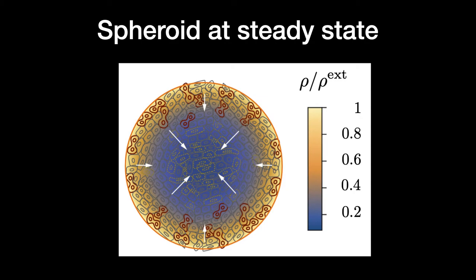As a result, a permanent cell flow exists from the outer surface to the core of the spheroid. This is due to the fact that dividing cells push the other cells inwards until they eventually die and break apart.